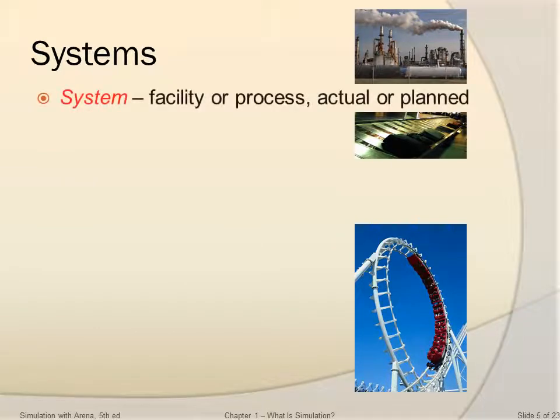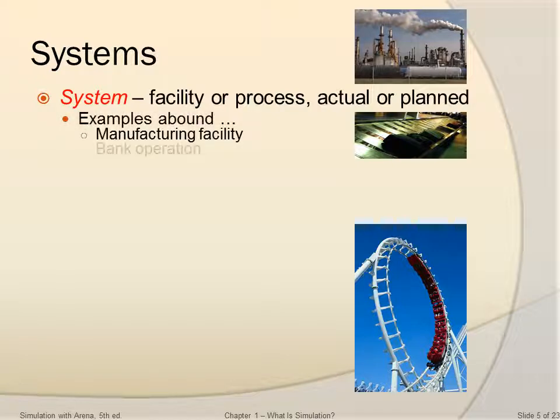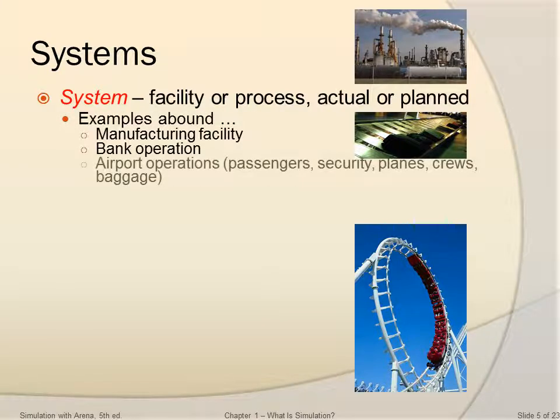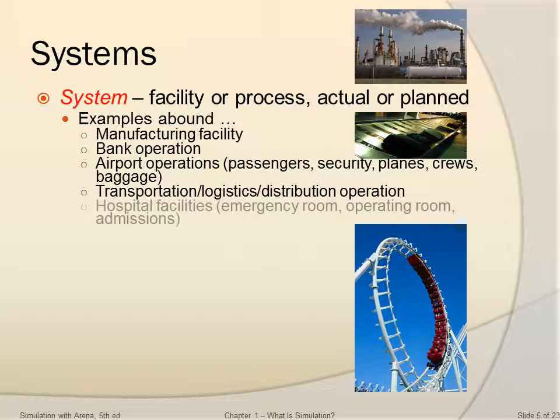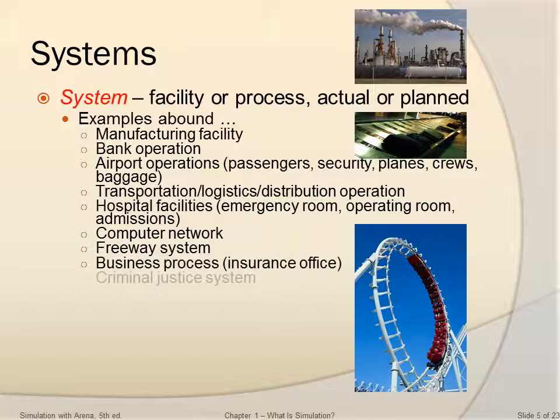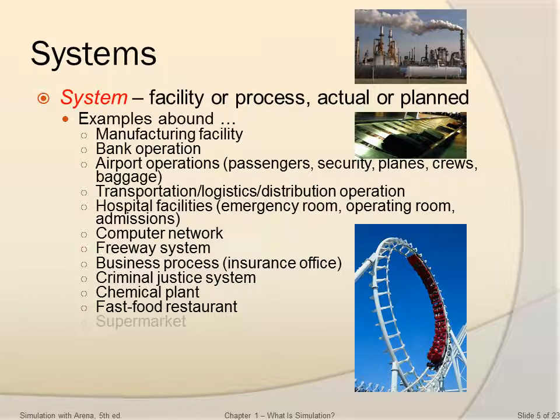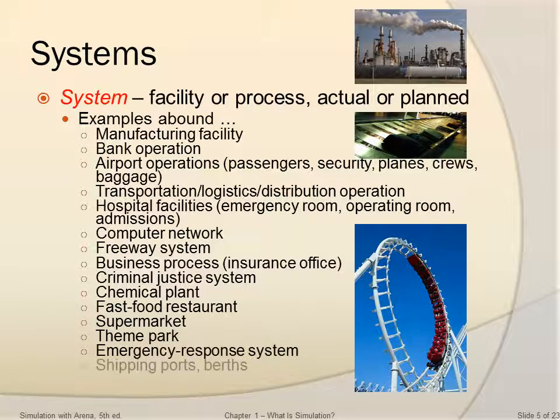A system is a facility or process, actual or planned. There are many examples including manufacturing facility, bank operations, airport operations, transportation, hospital, computer network, freeway system, business process, criminal justice system, chemical plant, fast food restaurant, supermarket, theme park, emergency response system, shipping ports, and military combat logistics.